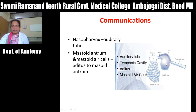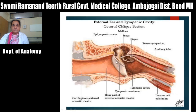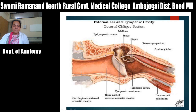This is the attico-tympanic cavity and middle ear cavity. This is a section showing the external ear, the middle ear, and later on there will be the internal ear. This is the middle ear cavity, this is the lateral wall, this is the roof, and these are the contents — the three ossicles: malleus, incus, and stapes — along with two muscles: the tensor tympani muscle and stapedius muscle. This is the canal for the auditory tube.